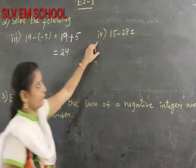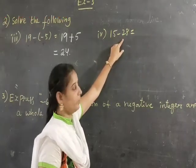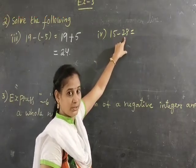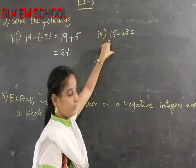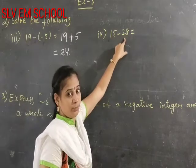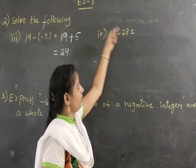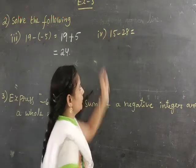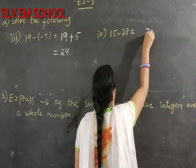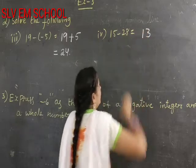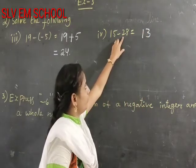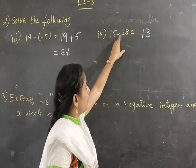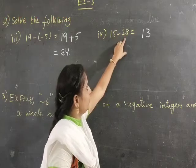Next, fourth: 15 minus 28. Here 28 is the biggest number, 15 is the small number. We have to do 28 minus 15. When we subtract small integer from positive big integer, we get the sign minus. The answer is minus 13.